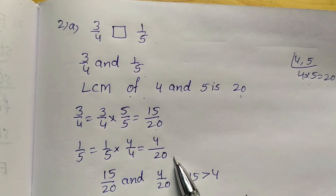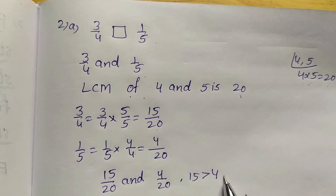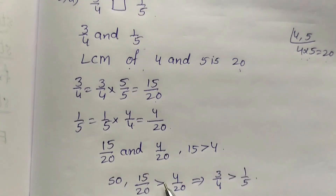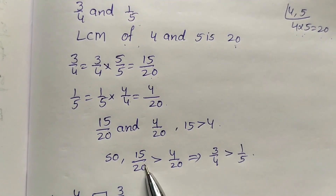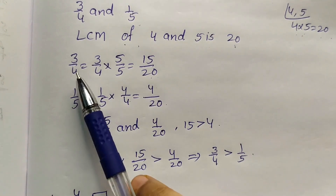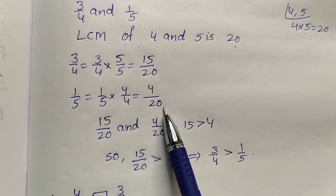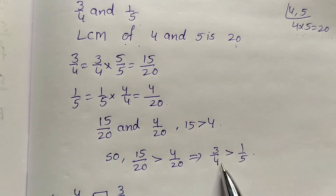Here the denominators are the same, so now compare the numerators — we have 15 and 4. 15 is greater than 4. So 15 by 20 is greater than 4 by 20. 15 by 20 is the equivalent fraction of 3 by 4. So 3 by 4 is greater than 4 by 20, which is the equivalent fraction of 1 by 5. So 3 by 4 is greater than 1 by 5.